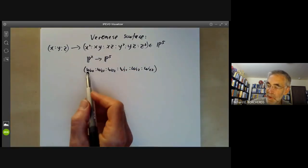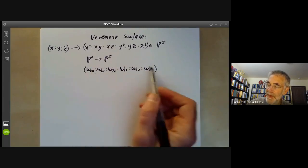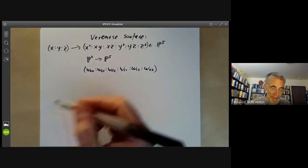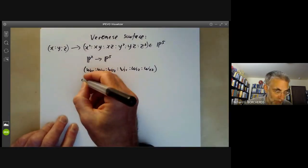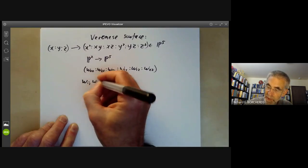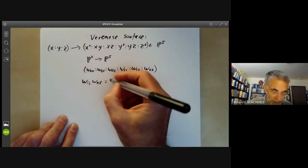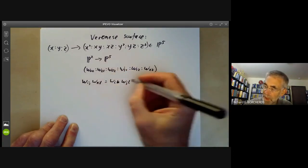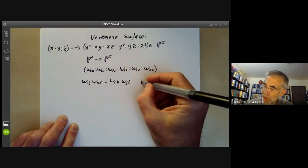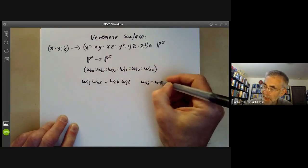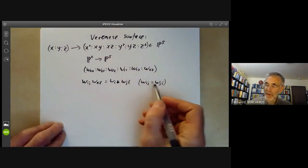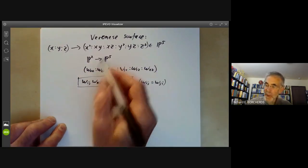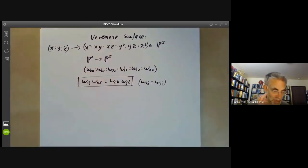We want to find relations between these numbers w that are automatically satisfied for all these points. It's pretty obvious we see that WIJ·WKL is equal to WIK·WJL for all IJKL where we put WIJ is equal to WJI corresponding to the fact that xy is equal to yx and so on. So this is a reasonably large family of quadratic equations satisfied by all these points here.